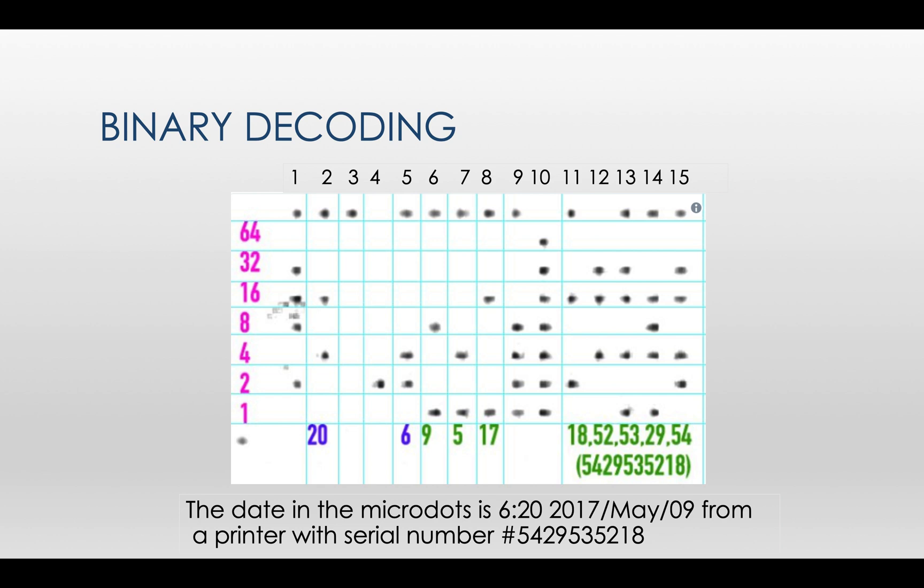And the time the document was released is 6:20, which happens to be the same value in the fifth column and the second column. The date the document was printed was 2017 May 9th, and it can be found from columns 6 to 8. So that is how these yellow dots restore the timestamp and serial number of the printer.